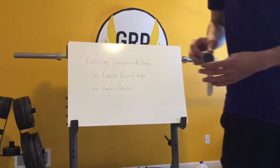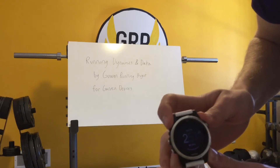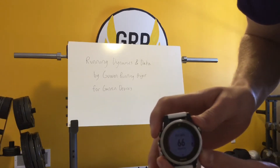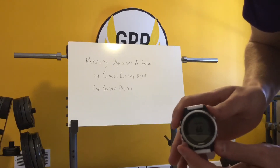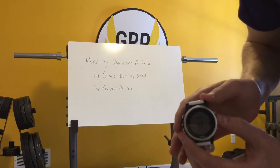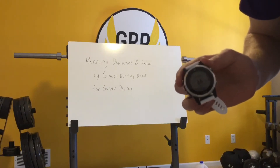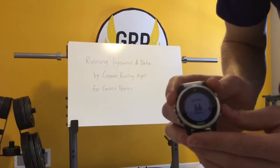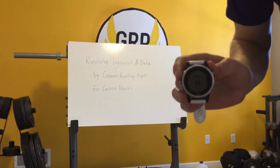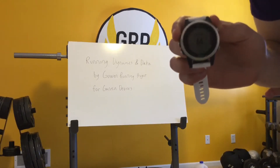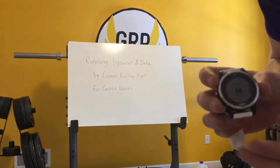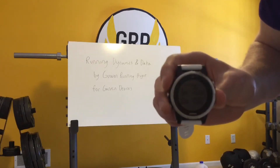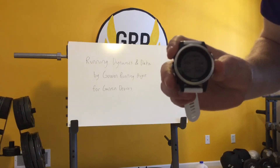First we're going to look at VO2 max. You scroll down on your training status, press enter, and there it is. Right now I'm at 66. VO2 max is basically a measure of how fit you are — at your maximum effort and maximum heart rate, how many milliliters of oxygen can you intake and use. It gives you a good general idea of where you are, and with that you also have your race predictors: predictions for times based on your VO2 max.